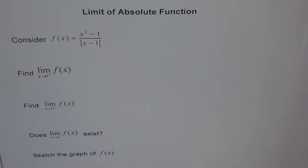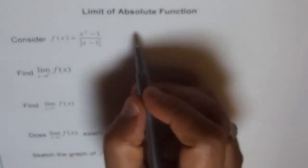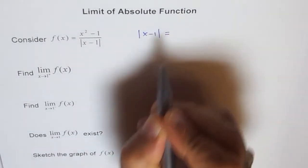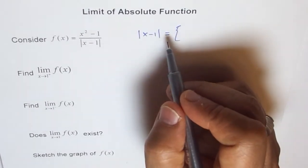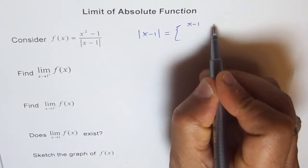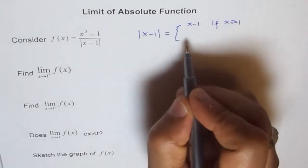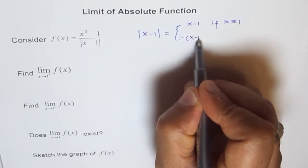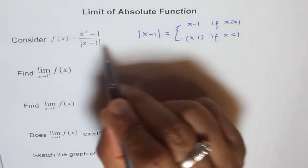Before we start, we should know what |x - 1| is. Let's define this function. The absolute value |x - 1| equals (x - 1) when x is greater than or equal to 1, and equals -(x - 1) when x is less than 1. That is how this function is defined.